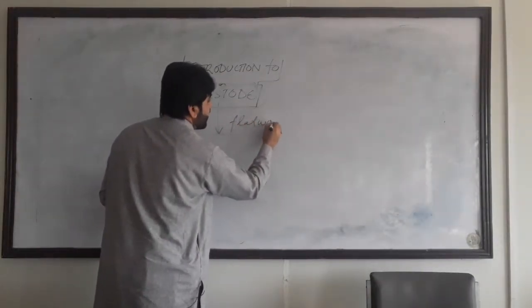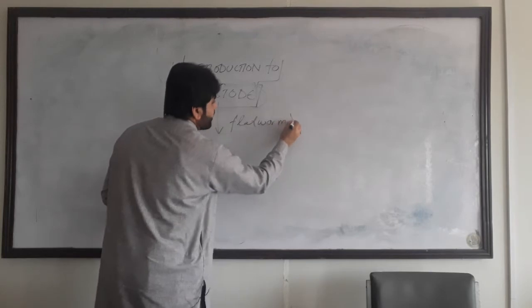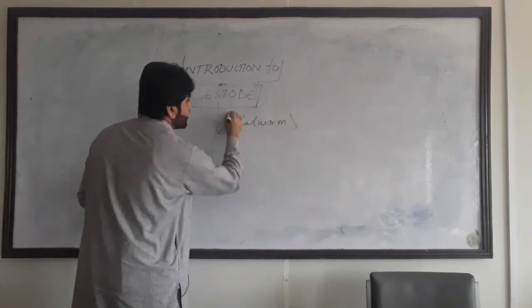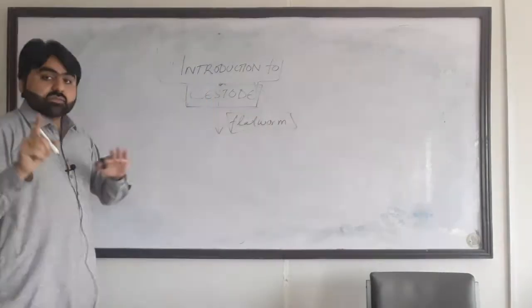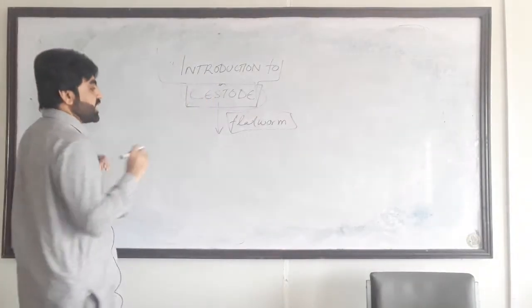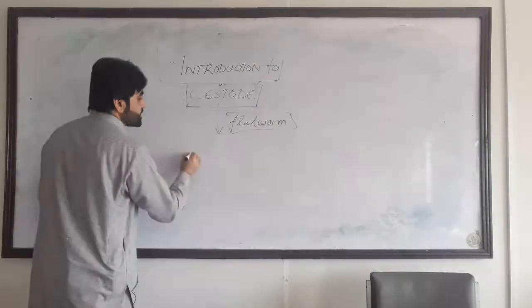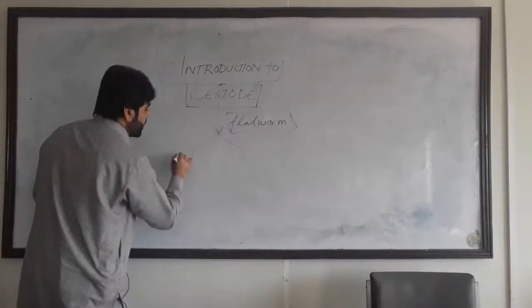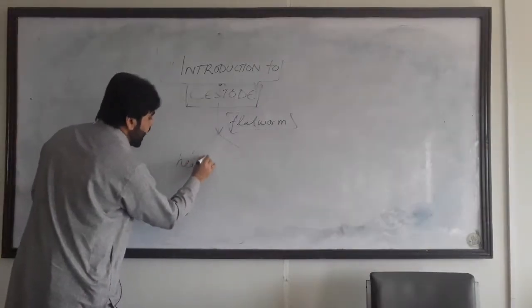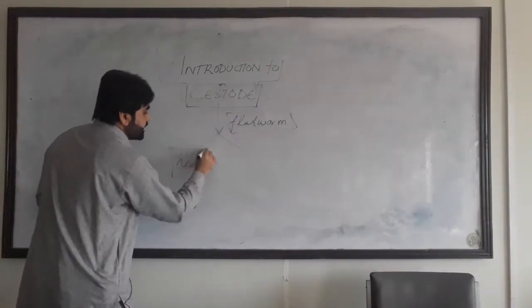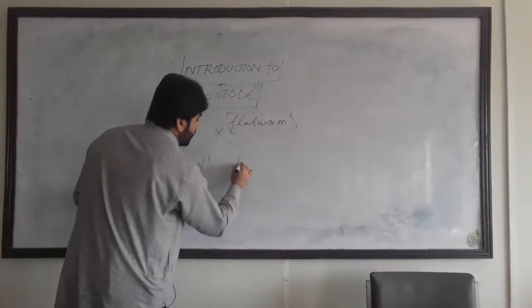Today we are going to introduce you to cestodes. First of all, a cestode is a flatworm — I will discuss what we mean by flatworm later in my lecture. The body of the cestode is composed of two parts: one is the head and the other is the body.